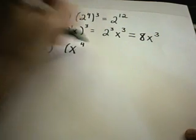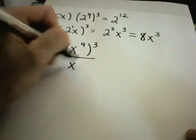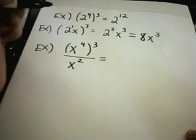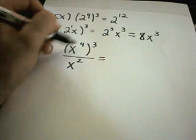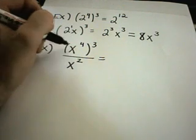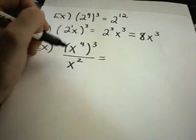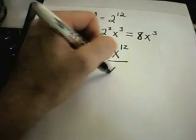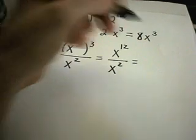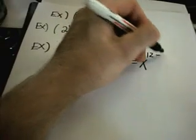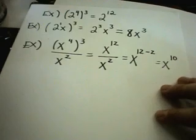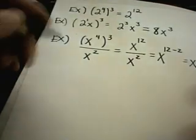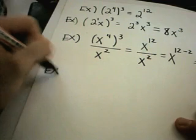Suppose I have x to the fourth raised to the third power, all over x squared. Be careful — only x to the fourth is being raised to the third power, not the denominator. First, use the multiplication property: four times three gives x to the twelfth on top, over x to the second. Now subtract exponents: twelve minus two leaves x to the tenth power.